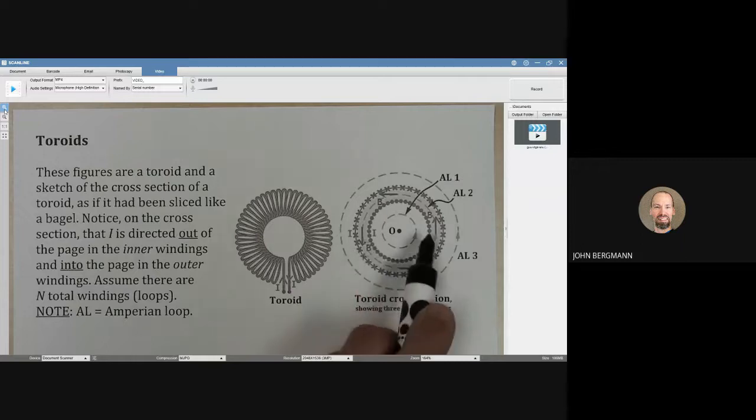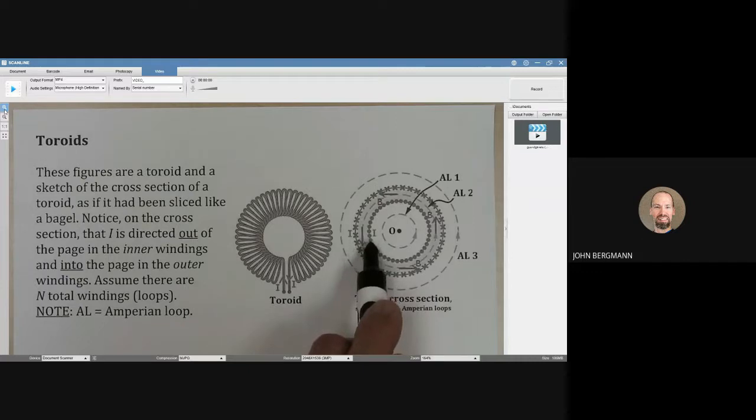is each of the windings of the wire and you can see that the little dots here indicate that the current right where I'm pointing is coming out of the page at us and then on the outside here where I'm pointing with my pen now the current is going into the page.